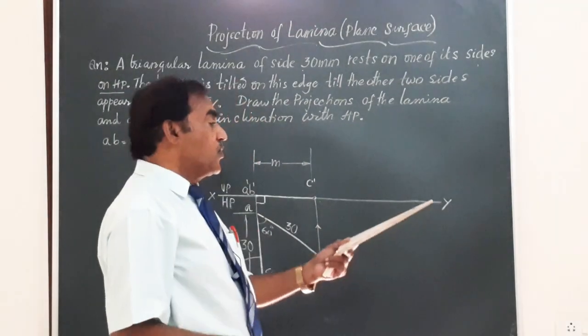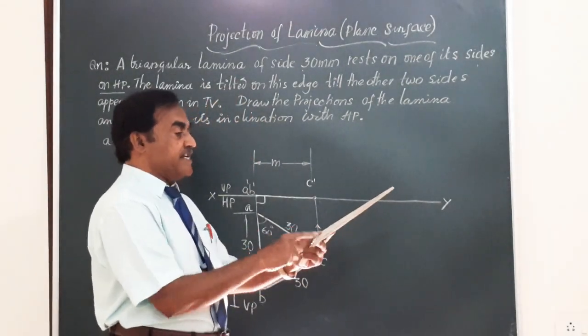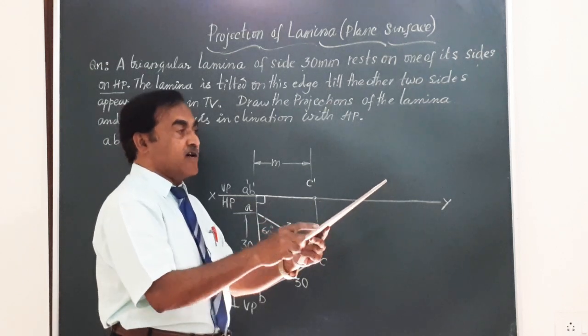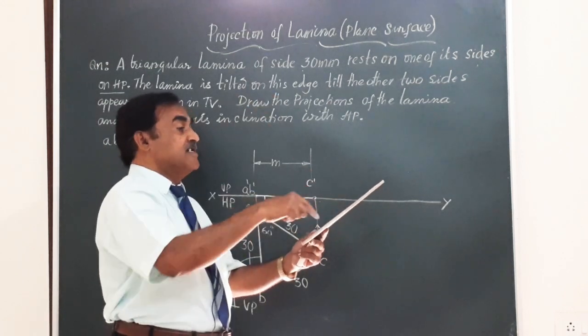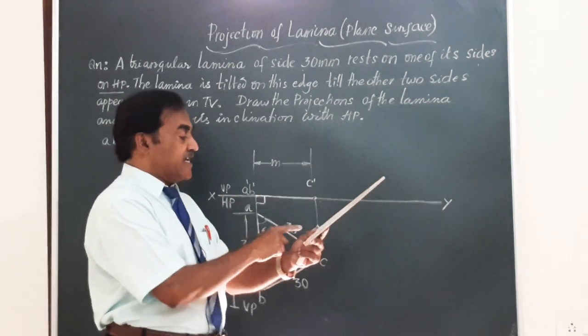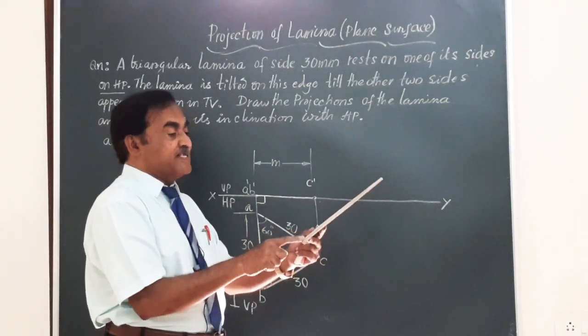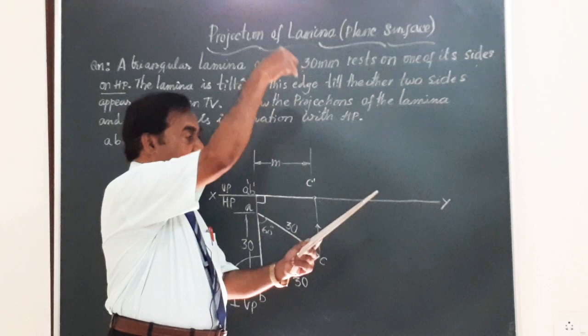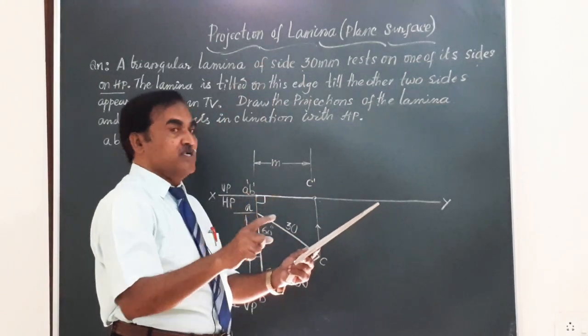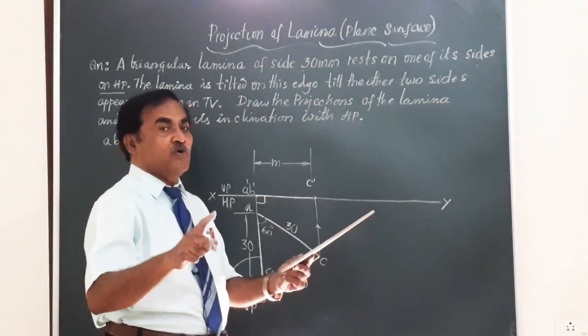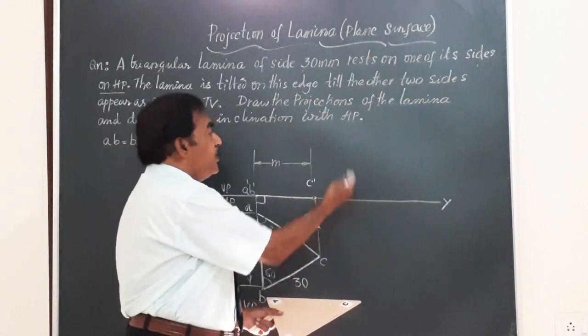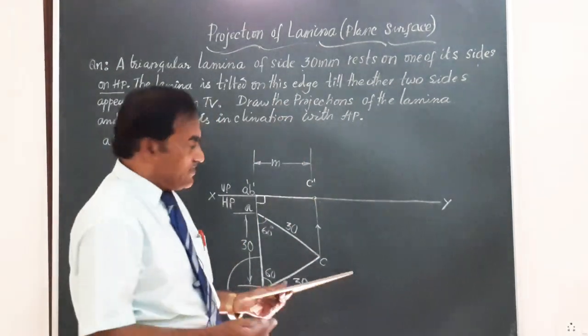So, when you hold this lamina on this edge with the surface making some angle theta, it appears as an isosceles triangle with the sides measuring AB 30, this will become 20, this will become 20. So, since we know the top view, let me complete the top view and get the inclination of the surface of the lamina.